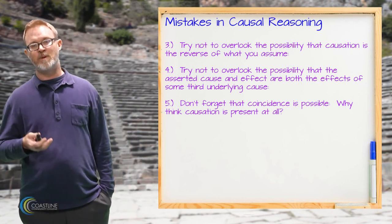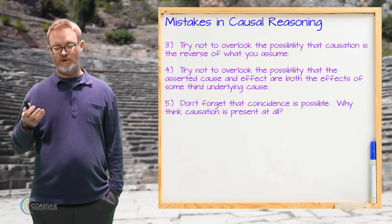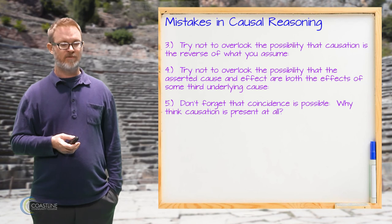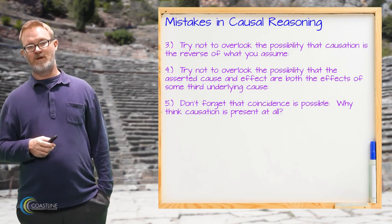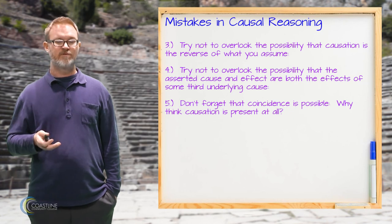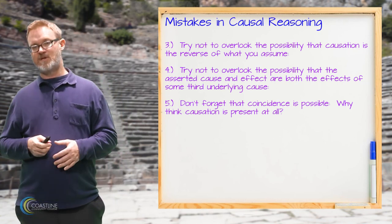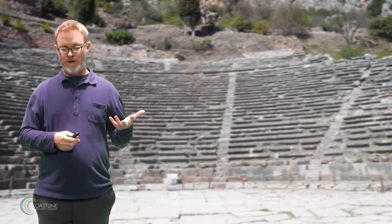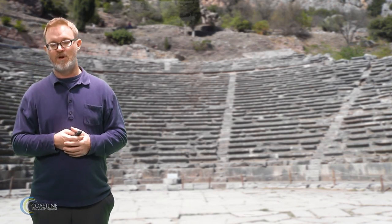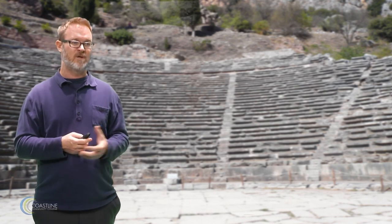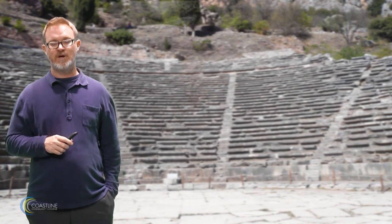The last point is that sometimes we have to remember that what looks to be a causal relationship is in fact just coincidence — it's just correlation. We can't ever lose sight of that idea. What appears to be a causal relationship going on is in fact merely coincidence, so keep an open mind to that as well. I think as we get older and have more experience with the way causes and effects work, we get better at this kind of thing. If we keep an open mind and get enough information about what might be the causes of the effects we see in our lives, we can be quite good at causal reasoning. I hope you enjoyed the lecture. We'll see you next time, thanks so much.